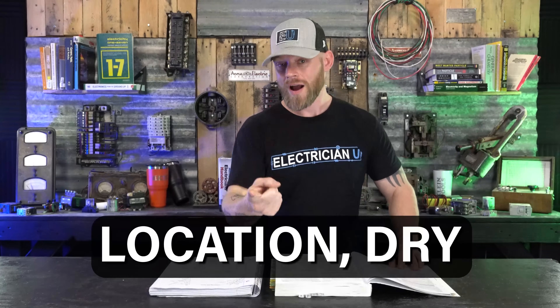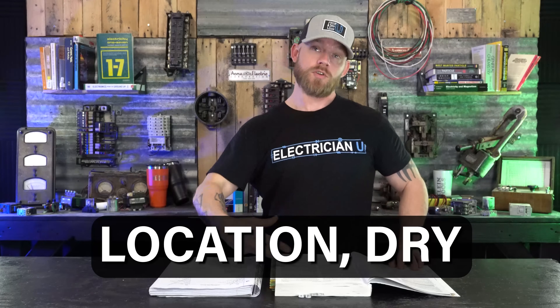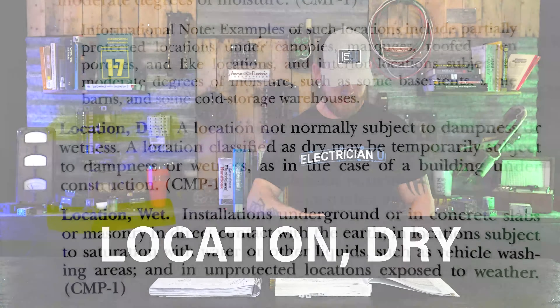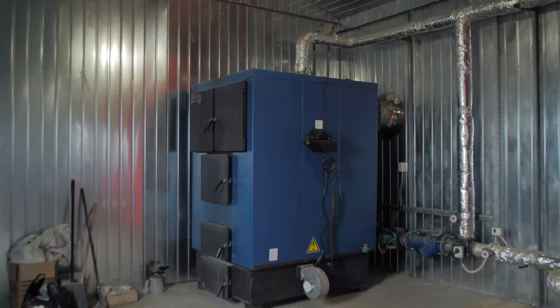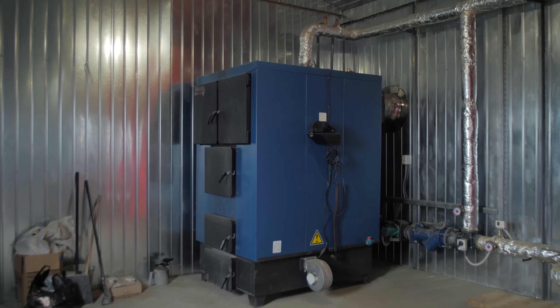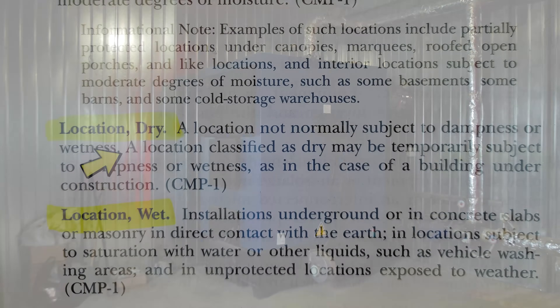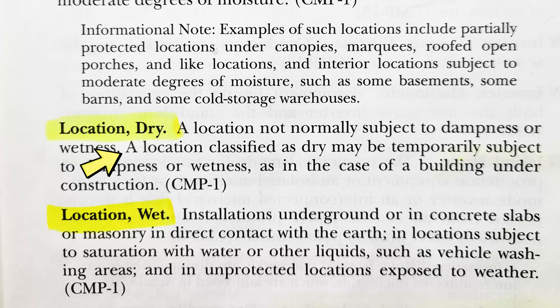Next up is dry location — we can probably guess what this means, but it is a location not normally subject to dampness or wetness, usually indoors. A location classified as dry may be temporarily subject to dampness or wetness, as in the case of a building under construction.